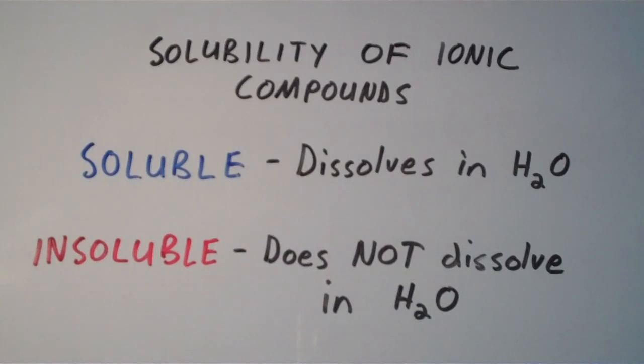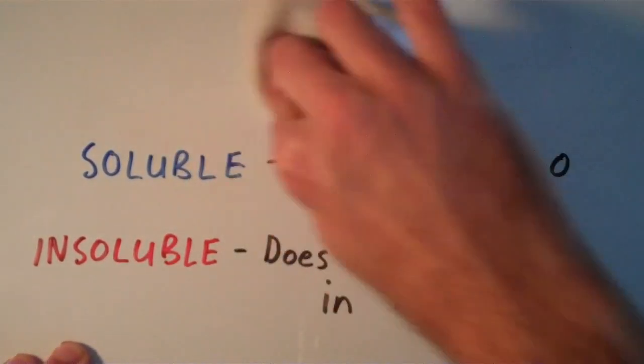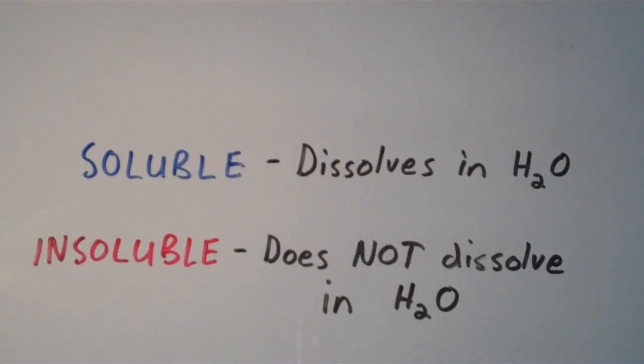In this video I'm going to talk about the solubility of ionic compounds. The main question we're asking is, will the ionic compound dissolve in water or won't it? A soluble ionic compound is one that dissolves in water, while an insoluble ionic compound is one that does not dissolve in water.